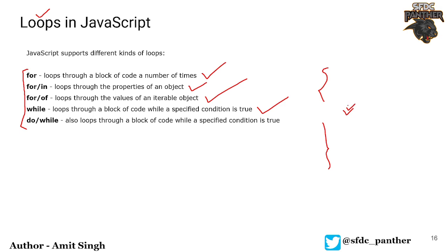In the while loop, we define our condition and then within curly braces we define the set of instructions the loop is going to perform. Then we have the do-while loop, which tells the program to do something first and then define the condition at the end. Let's quickly look at the syntax for these loops.